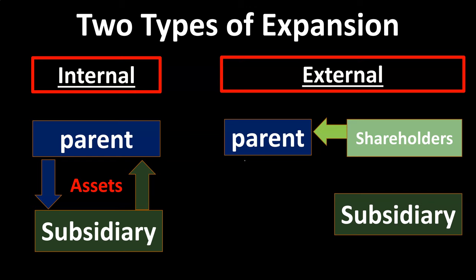Instead of the parent creating the subsidiary internally, there is a combination of entities resulting in a parent-subsidiary relationship. Note that in external expansion, if there was a full purchase of a subsidiary company, the parent may choose to dissolve the other company, resulting in one single company with multiple divisions, or — which is often the case — keep the relationship as a parent-subsidiary type of relationship.